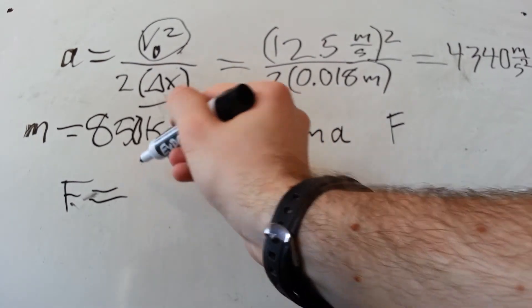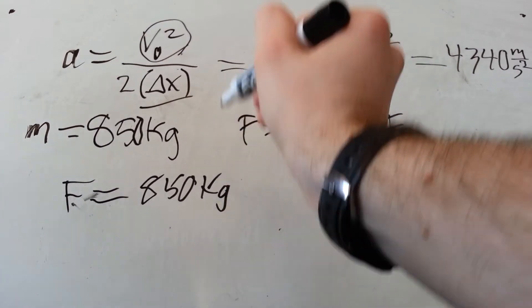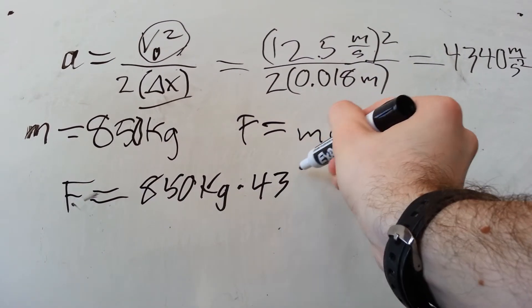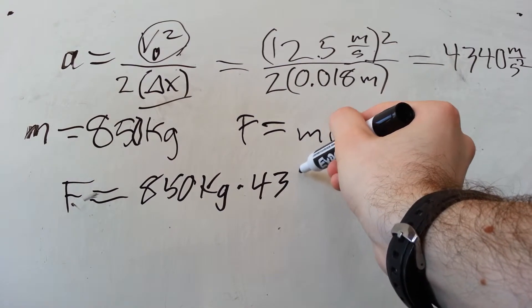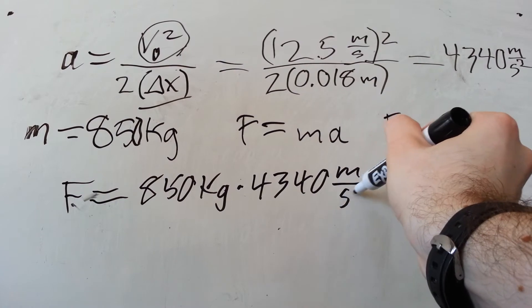F is equal to 850 kilograms times 4340 meters per second squared.